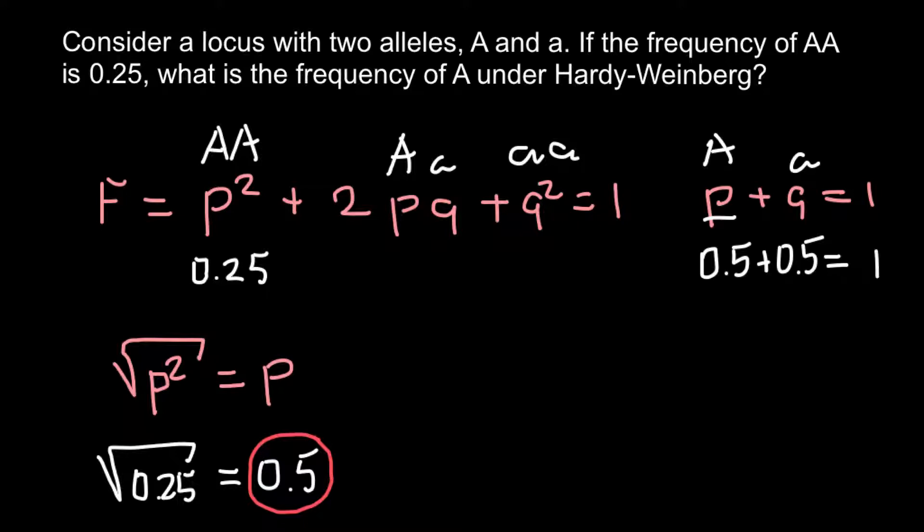So what would be the frequency of q²? This is going to be 0.5 multiplied by itself, so 0.5 times 0.5. So the frequency of the homozygous recessive genotype would equal 0.25.